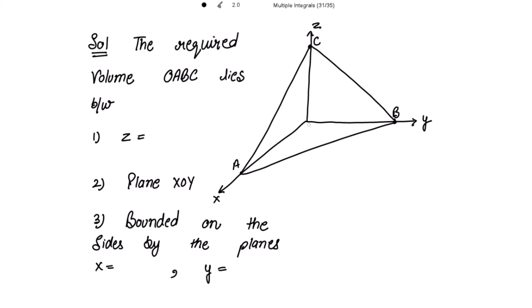This is your origin O, and this is your XOY plane. Now let me draw a rectangular pipe whose sides are parallel to the x-axis and y-axis, and its length is parallel to the z-axis.